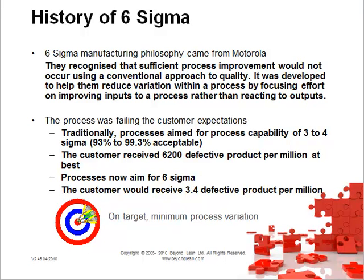A little bit about the history of Six Sigma — where did it come from? Six Sigma is a manufacturing philosophy that came from Motorola initially. They recognised that sufficient process improvement wouldn't occur using a conventional approach to quality. It was developed to help them reduce variation within a process by focusing effort on improving inputs to a process, rather than reacting to outputs.